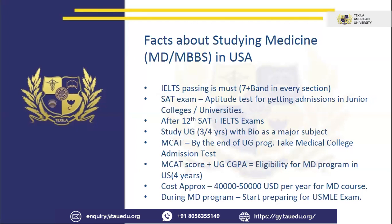Once you clear the UG course — a 3 to 4 year bachelor's program — you then prepare for the MCAT exam. The MCAT, Medical College Admission Test, is conducted for getting enrolled into the MD program in US medical schools. The eligibility for admission into the MD program is decided through both the MCAT and your UG course performance. The MD program is again 4 years, so overall you will go through 4 plus 4 years — UG course for 4 years and MD program for 4 years.